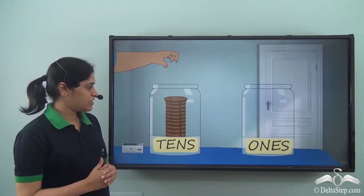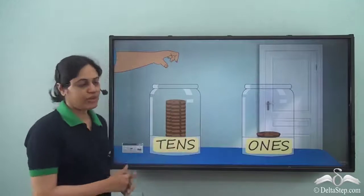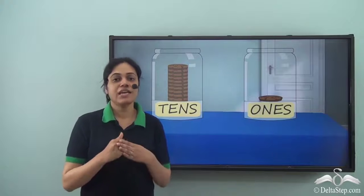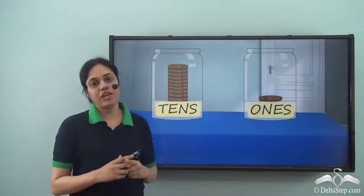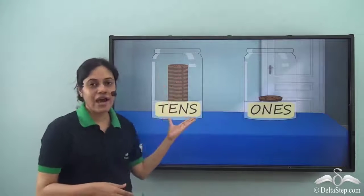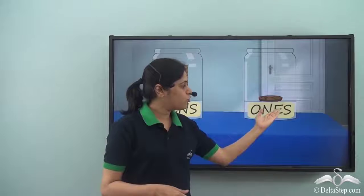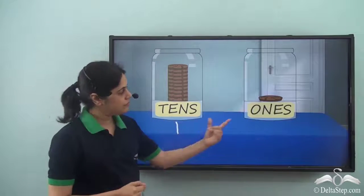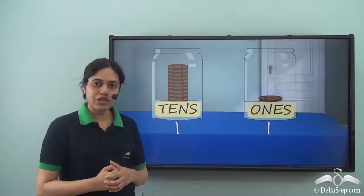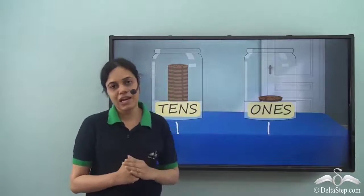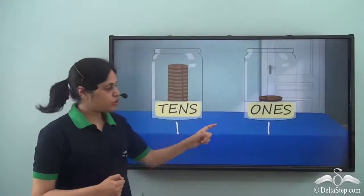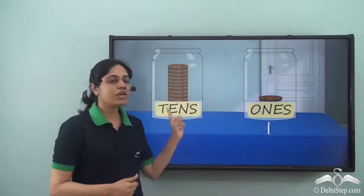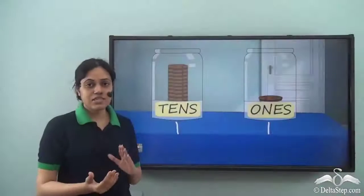Abir added a single cookie to the tens jar, but it jumped to the ones jar. This means that the tens jar cannot have single cookies — it can have only piles of ten cookies. As soon as you add a single cookie to the tens jar, it goes to the ones jar. So now I have one pile of ten cookies here and one single cookie here. That is ten plus one — eleven. So if I write one in the ones place and one in the tens place, I get eleven.